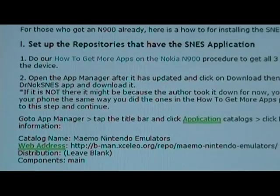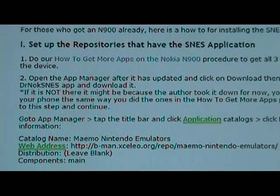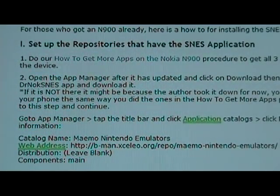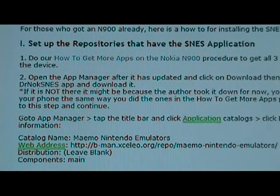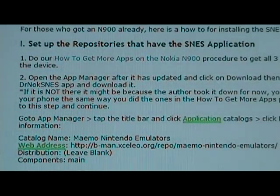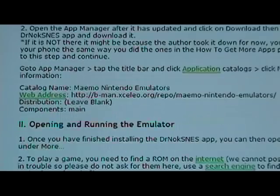Once you've done that procedure and you have all the repositories, you can click on Download, then click on Games, and you'll look for the Dr. Nock SNES app. Once you find it, click it and download it. If it's not there, then it might be temporarily unavailable, so we have a backup repository that has it.